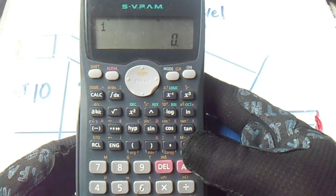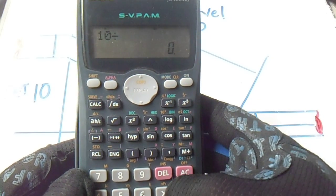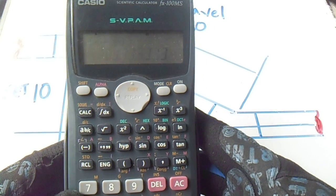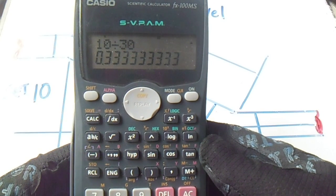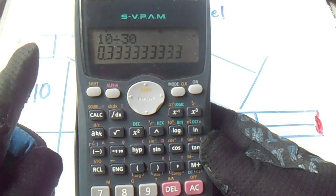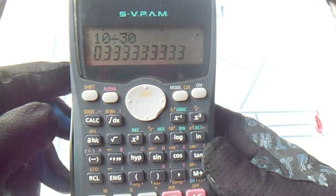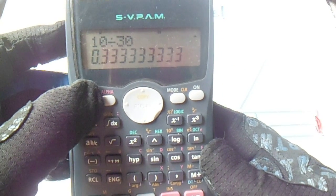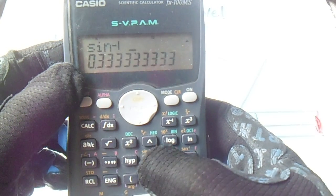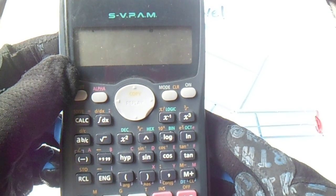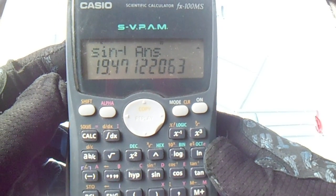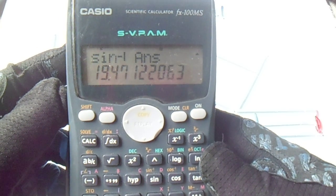So 10 divided by 30, we have a set of 0.33333 and so on. To find the angle, just press shift and then press the sine. So we have an answer of 19.47 degrees.